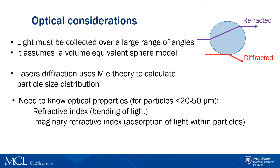Particles larger than this size provide useful information through diffraction but not refraction. This means we do not need the refractive index to accurately interpret the scattered light. For particles smaller than 20 microns, refracted light becomes increasingly important, and the choice of refractive index will directly affect accuracy in this size range.